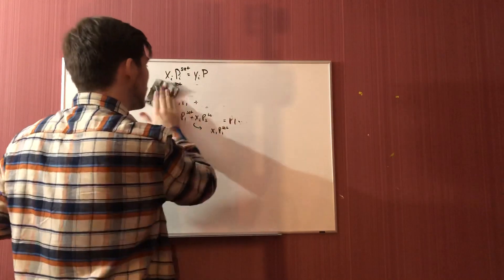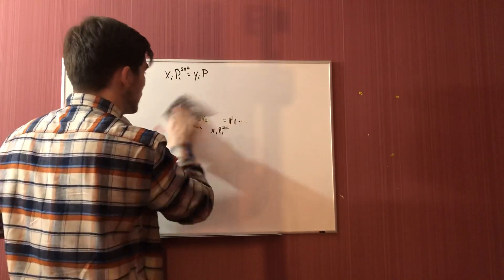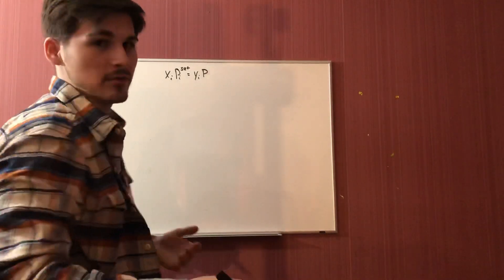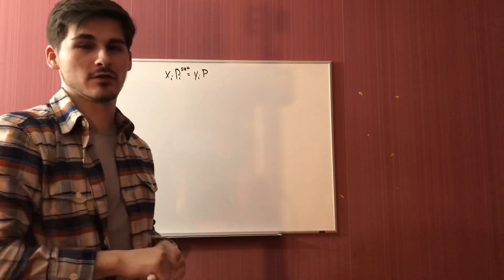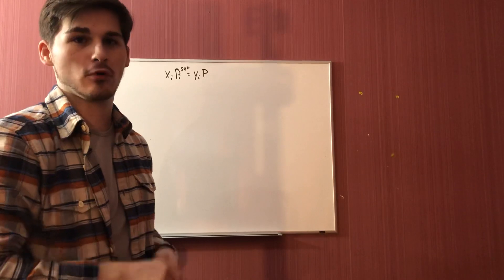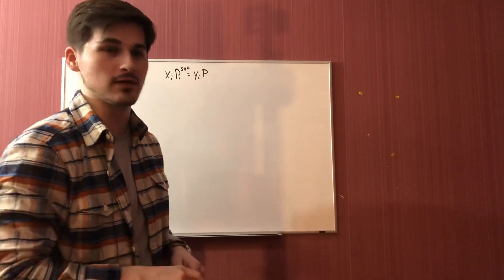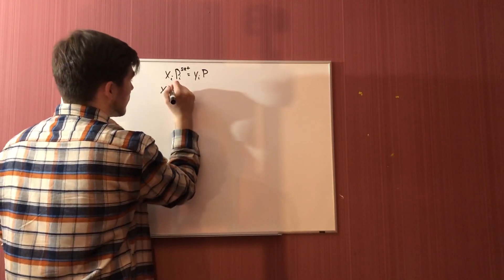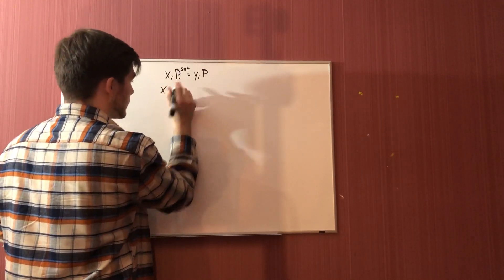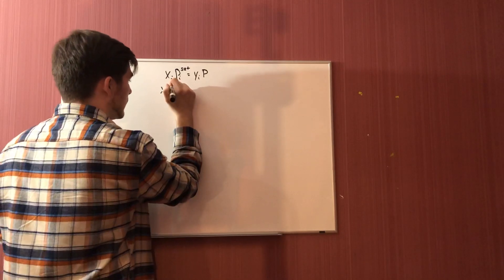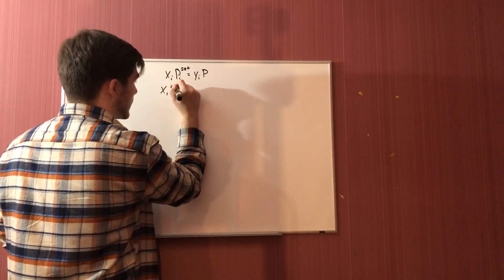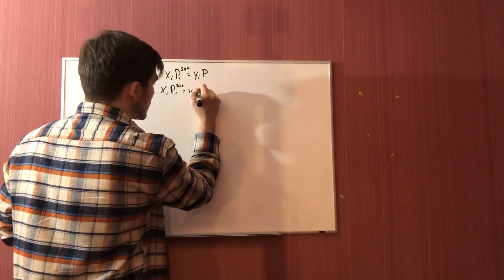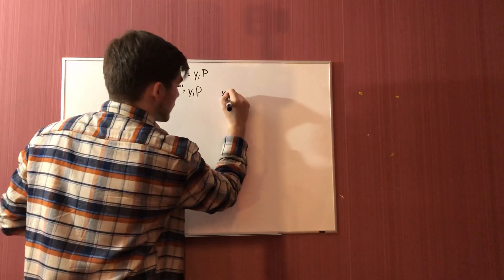Now we will go ahead and work with the dew temperature, which is found very similarly to how we find the bubble temperature. With the dew temperature, we assume that we already know the mole fractions of the vapor phase. We rewrite the Raoult's law equations for both components: the liquid mole fraction of component one times its saturation vapor pressure equals the vapor mole fraction of component one times the total pressure, and the same for component two.